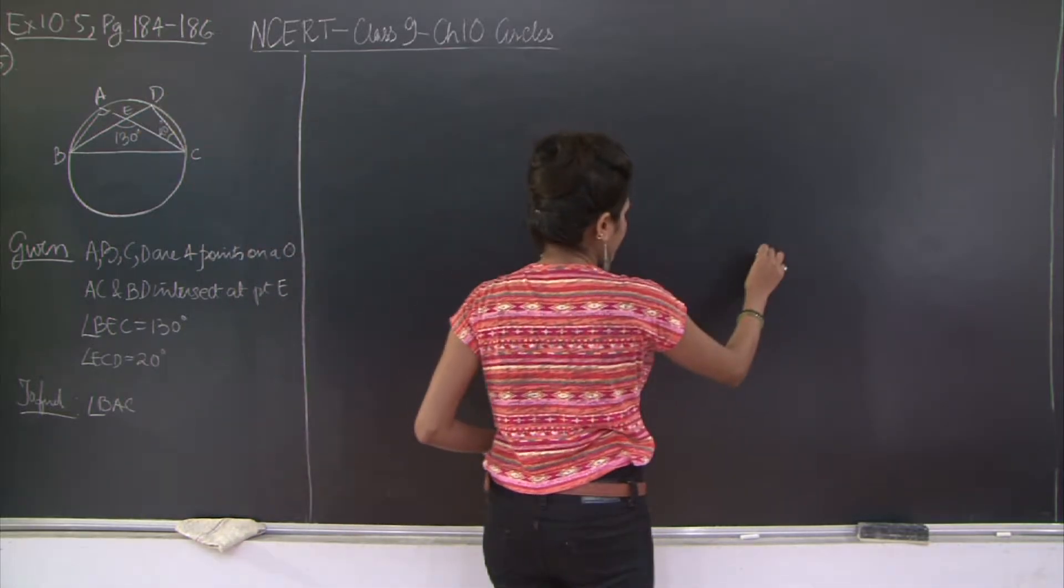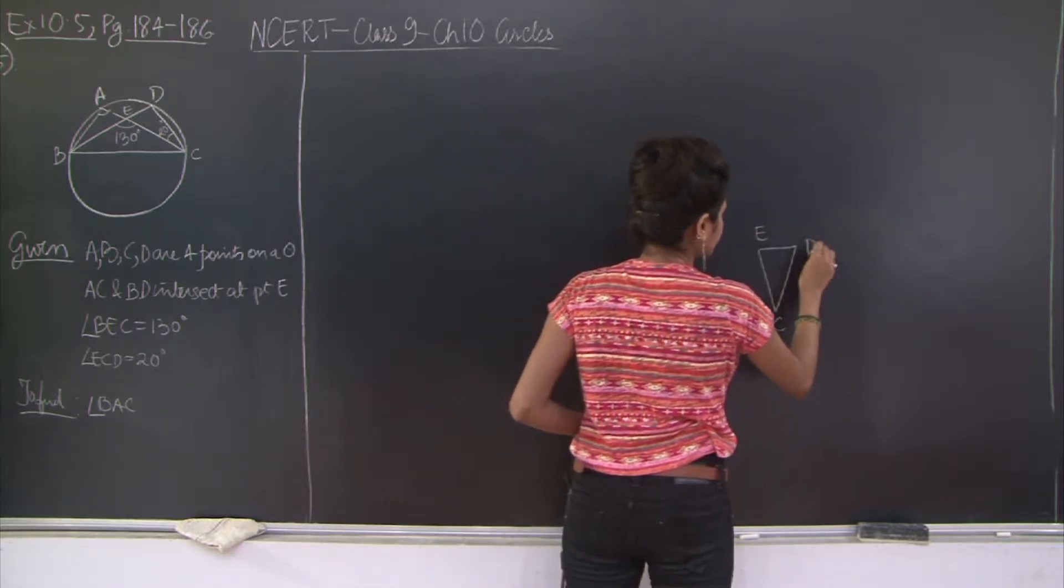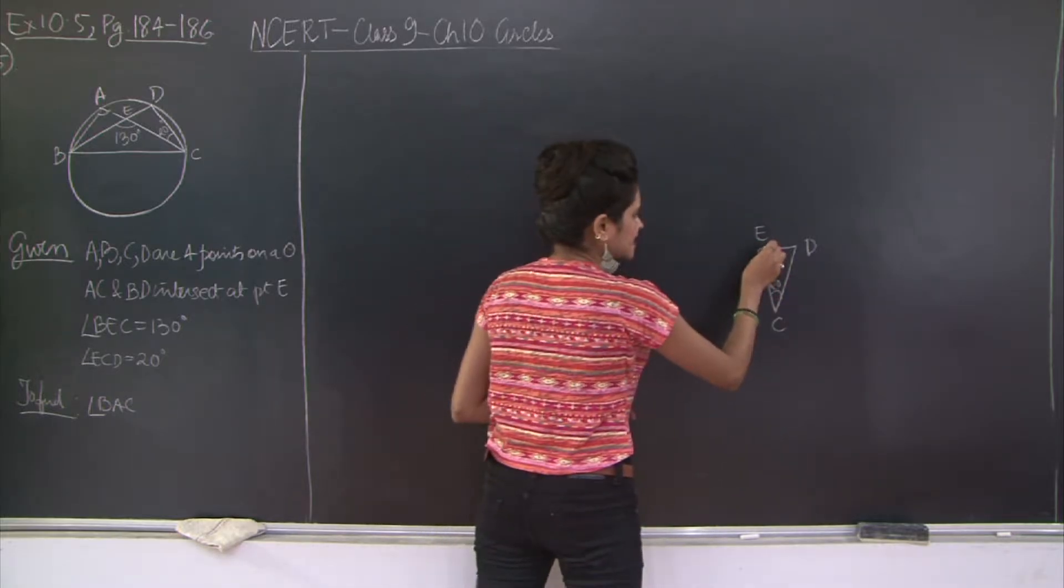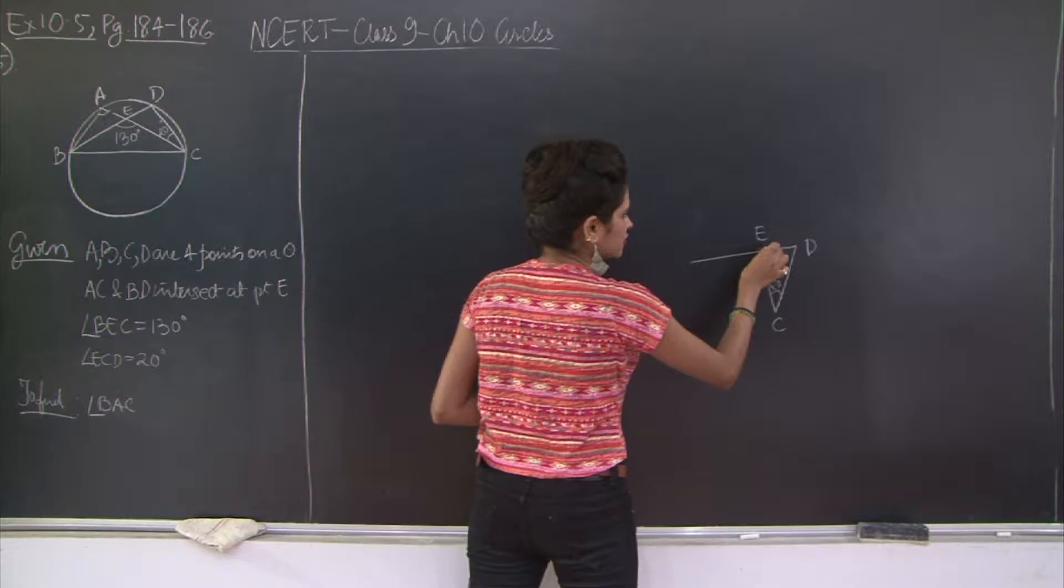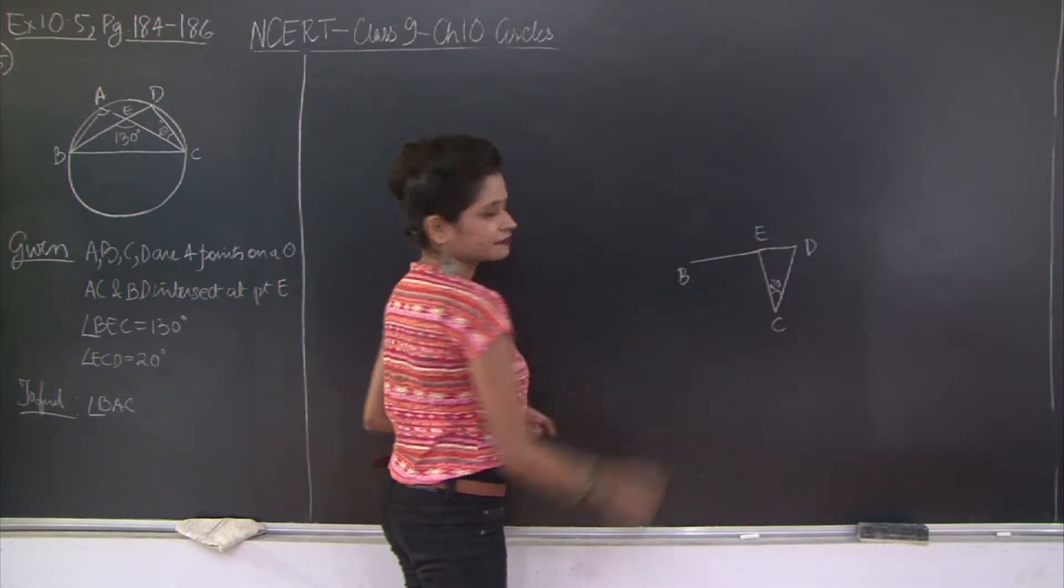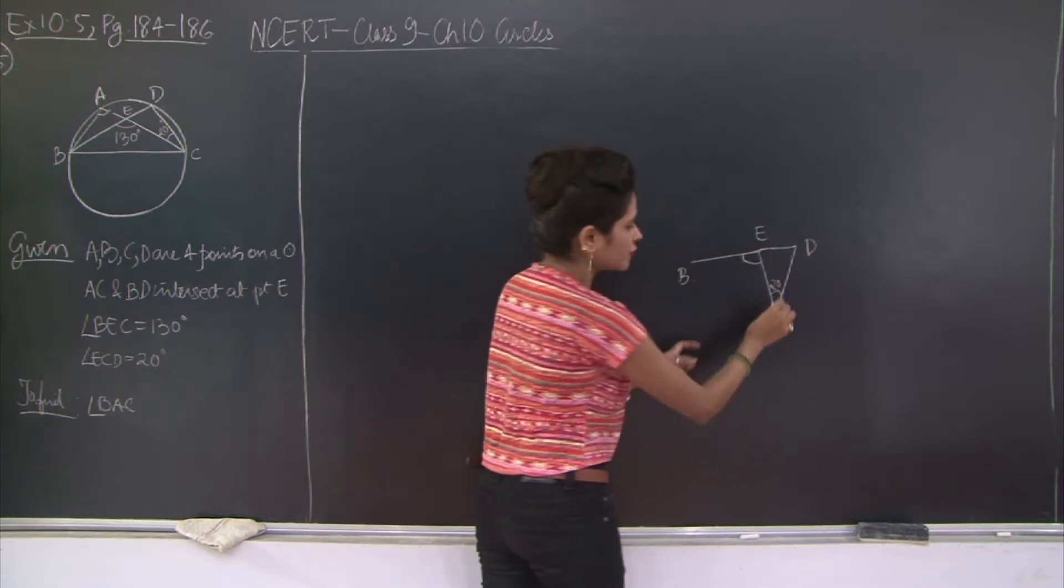Now if you notice this triangle out here CED, let me draw this triangle for you. You have C, E, and D. This is 20 degrees and now ED is extended until point B.